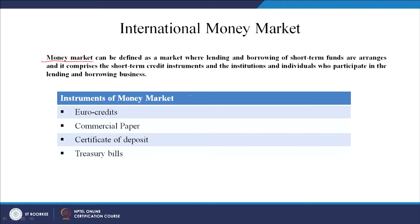The money market has several instruments — these are not all of them but some key ones. Some of the instruments in the money market are euro credits, commercial paper, certificate of deposit, and treasury bills. These are all short-term instruments.